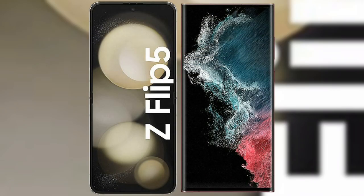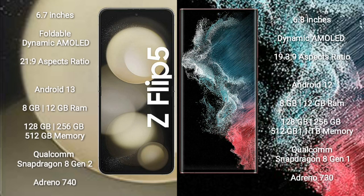I will compare the new Samsung Galaxy Z Flip 5 with Samsung Galaxy S22 Ultra. The Galaxy Z Flip 5 comes with a 6.7-inch foldable Dynamic AMOLED display with an aspect ratio of 21:9, while the Samsung Galaxy S22 Ultra comes with a 6.8-inch Dynamic AMOLED display with an aspect ratio of 19.3:9.